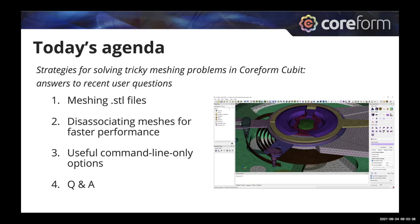We do webinars about every month. We've noticed a big increase in questions in the Coreform online forum. We thought it would be fun to answer live some of the interesting questions that have come in. The three topics today are: how to mesh STL files, how to disassociate meshes for faster performance in Coreform Cubit, and some useful command-line-only options to enhance your modeling workflow. We'll also have time for Q&A.